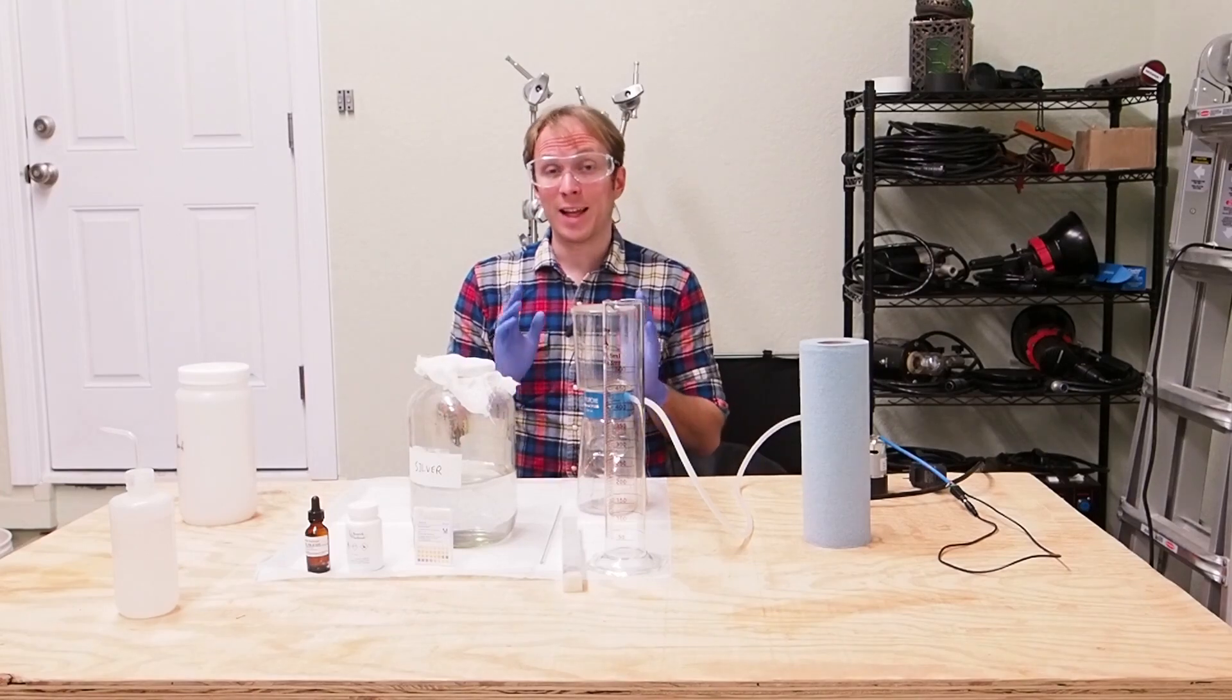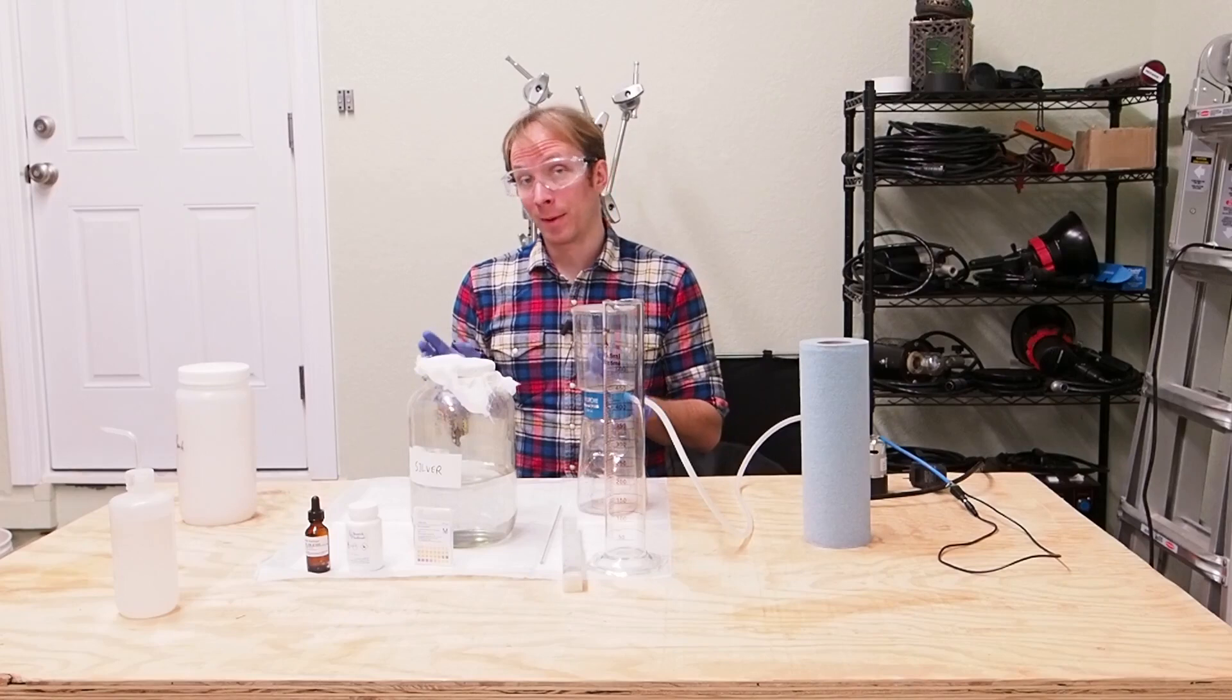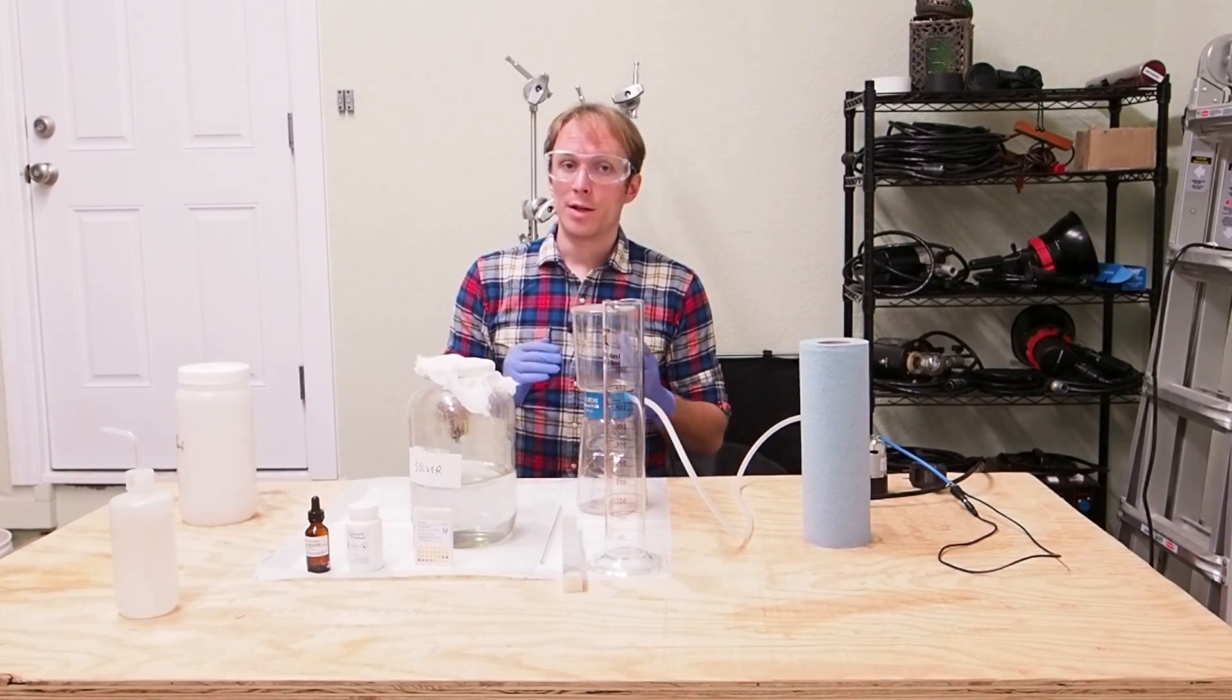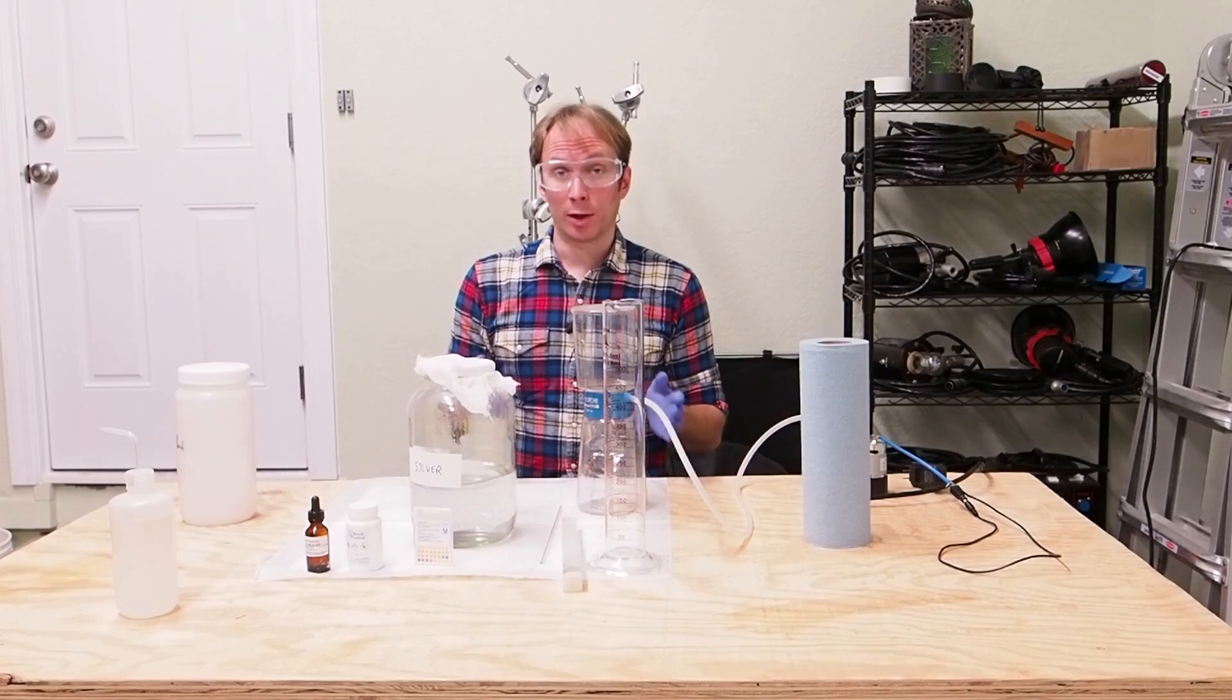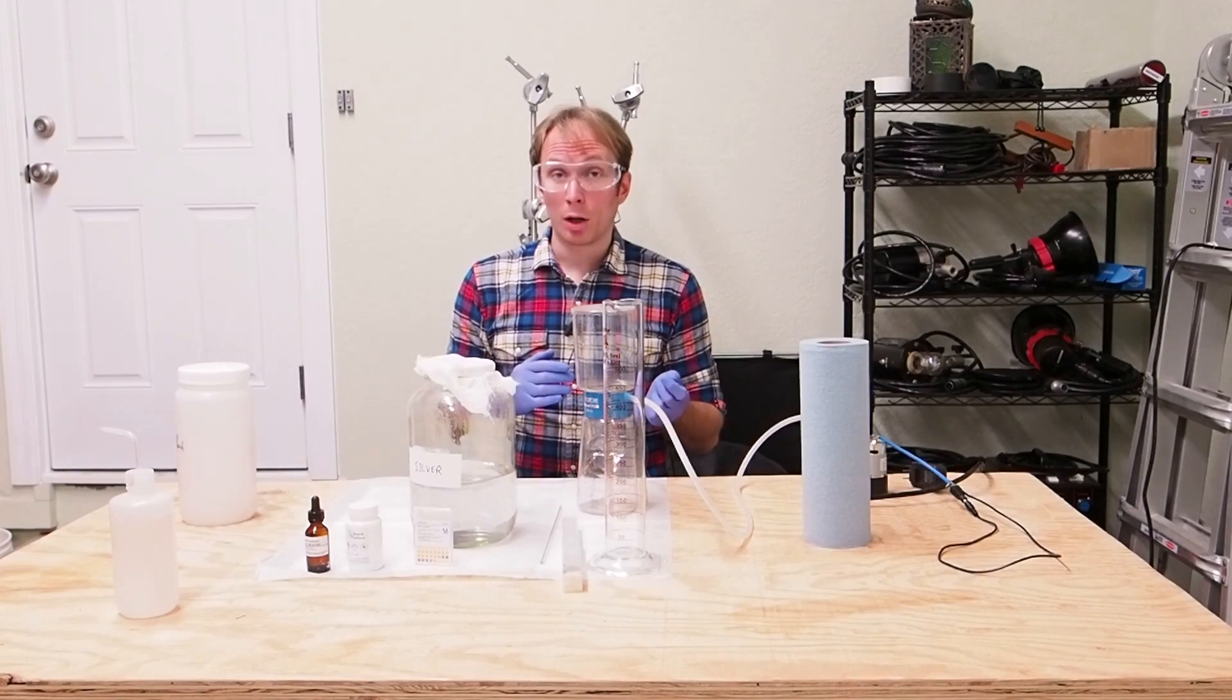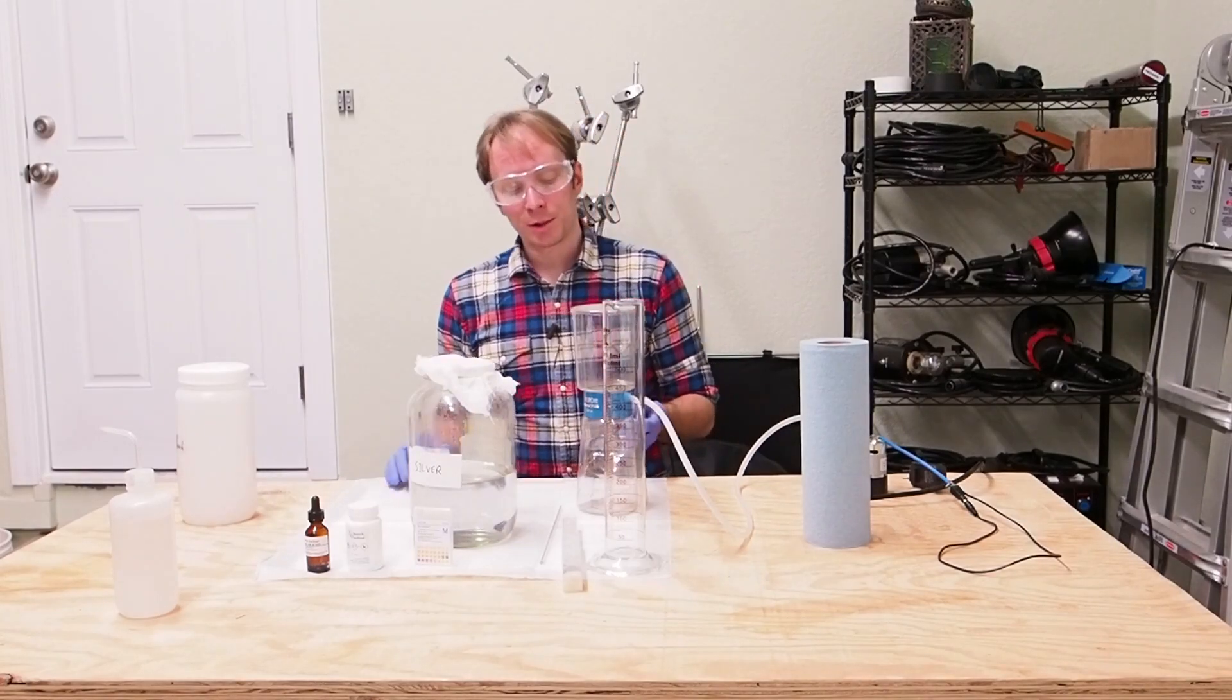First of all, I recommend at the end of every session, filtering your silver bath from its tank back into the bottles you store it in. You can use filter paper for this, it works great. Cotton balls in the base of a funnel are also a perfectly good option.